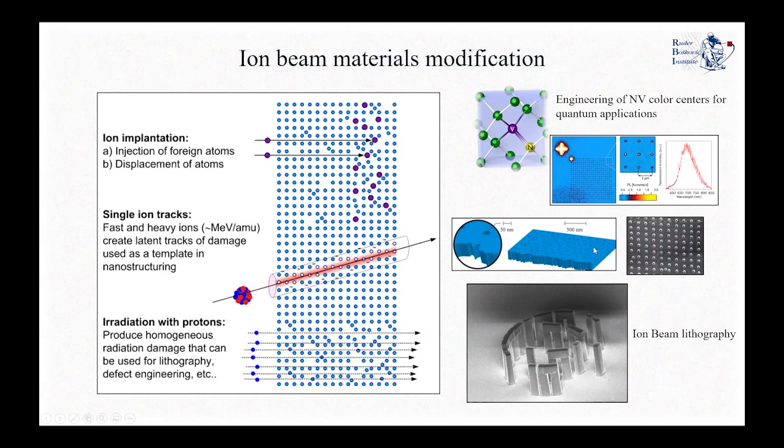Other applications to modify materials include ion beam lithography, applied with protons, where the aim is to produce homogeneous radiation damage and very specified localized defects — engineering of defects — and one can use this to produce devices at the nanoscale.